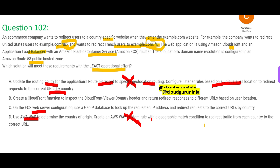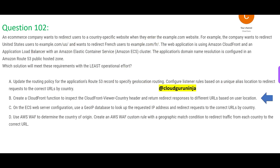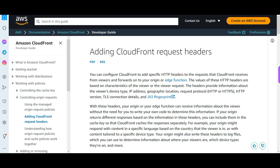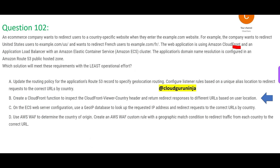Option C talks about ECS web server configuration using a GeoIP database — it would maintain a database, look up the IP address, and redirect. This is a custom solution. Thumb rule: do not create custom solutions. AWS does not want to know how intelligent or innovative you are — they want you to understand their own product. So option B would be our final answer: use a CloudFront function to inspect the CloudFront viewer country header and return direct responses. If you already have CloudFront, why create custom solutions? You can configure CloudFront to add specific HTTP headers to requests it receives from viewers, then forward to the origin or edge function.